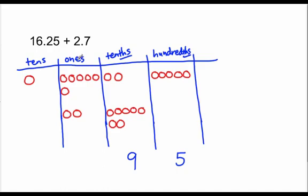Between the ones and the tenths place there is always the decimal point. That tells us that anything to the right of the decimal point is part of a whole. Now I add up my ones: five, six, seven, eight — I have eight ones. And I have one ten. So the answer is eighteen and ninety-five hundredths.